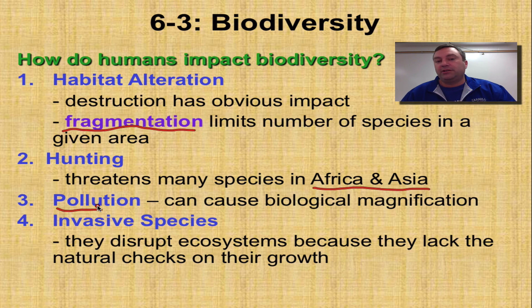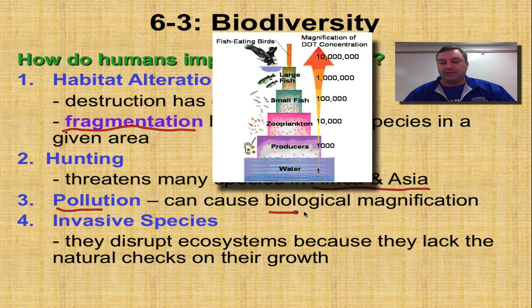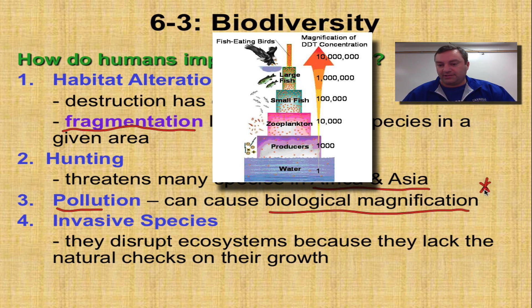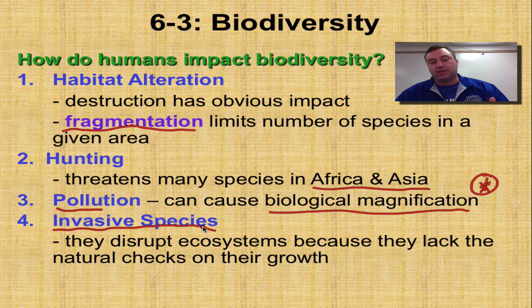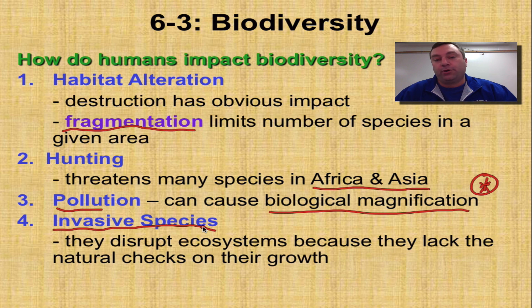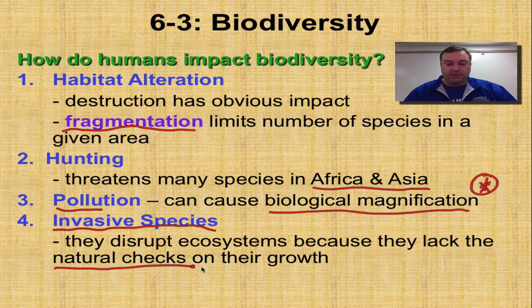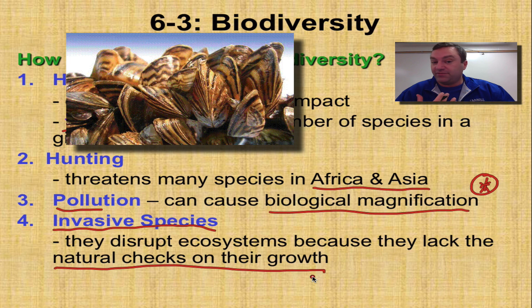Pollution: when you toss pollution into an ecosystem, you can lead to biological magnification — we covered that a couple of screencasts ago. This is a very important concept, so make sure you know this one for your test. Here's one that's really impacting our area of the Midwest: invasive species. These are species that don't belong there. They were accidentally, or sometimes on purpose, put into the ecosystem, and what they do is disrupt it because they do not have any natural checks on their growth. In our area of Indiana, think of the zebra mussels.